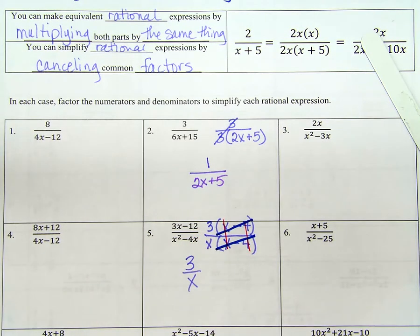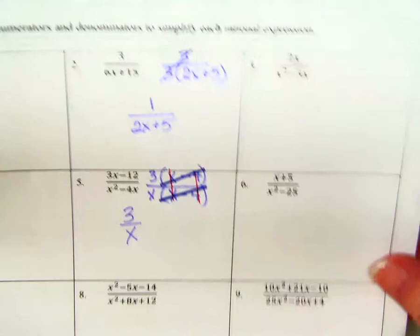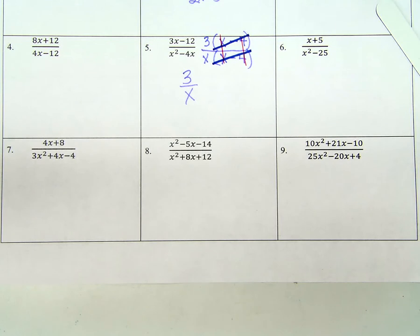Factors is all I can cancel out. I can't cancel numbers that are being added, subtracted to each other. I can only cancel things that are being multiplied. Only factors. Okay? Now, a lot of times people tell me the answer to this problem is 2X plus 5. Someone, please tell me why they are wrong.